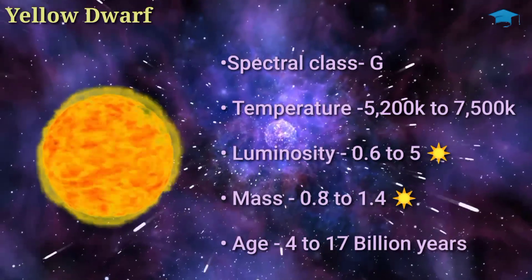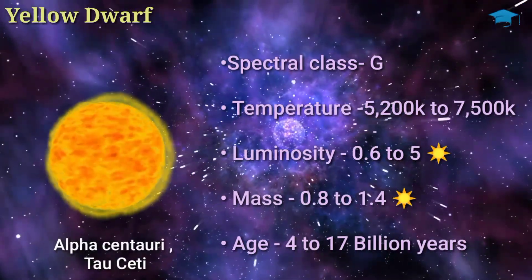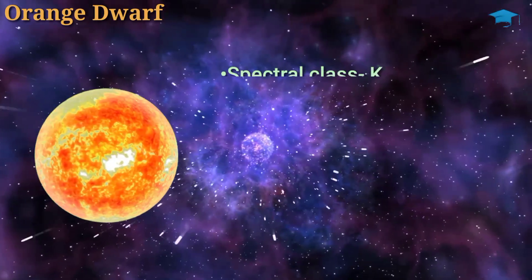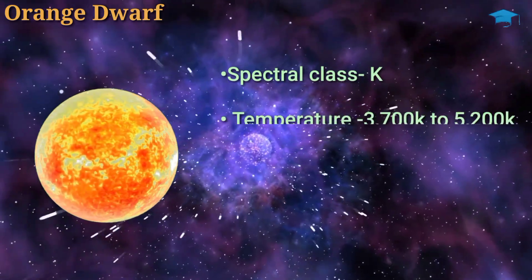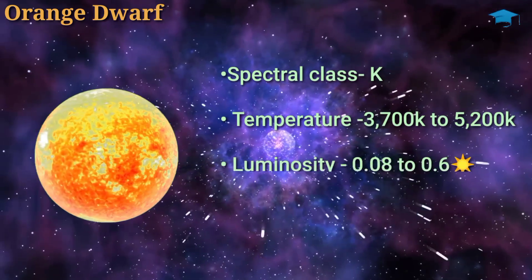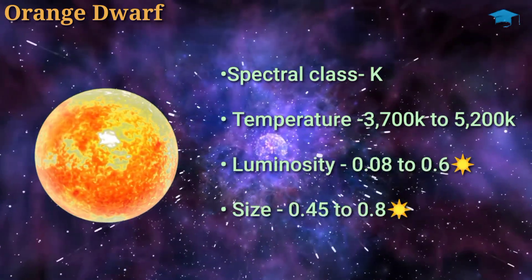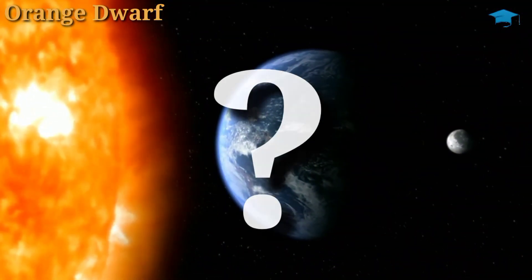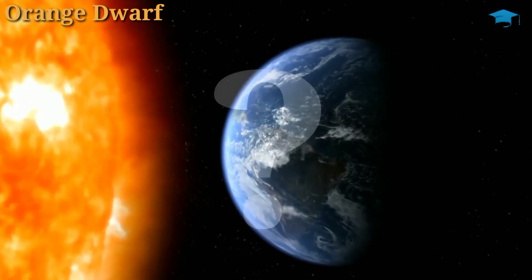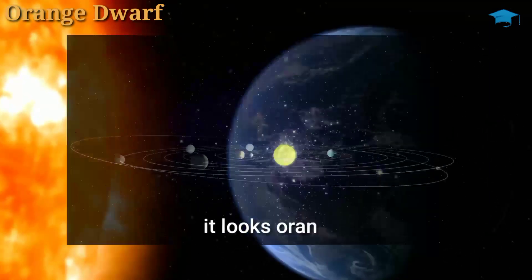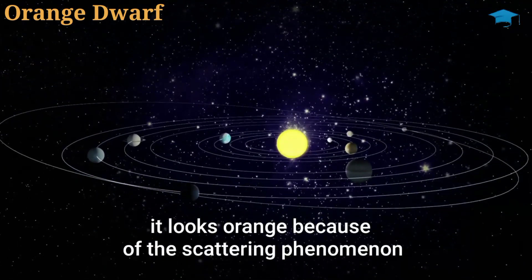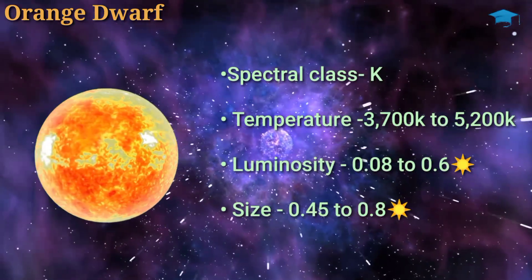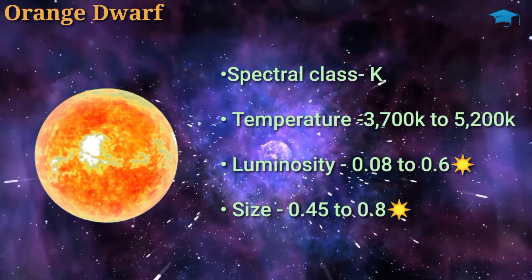The next one are orange dwarfs. These stars are of spectral type K and they have temperatures between 3,700 Kelvin to 5,200 Kelvin and with luminosities of around 0.08 to 0.6 times that of sun. Now most people will think why our sun is not classified as an orange dwarf because it looks orange from earth. It looks orange from earth because of the scattering phenomena of earth's atmosphere. And on the other hand, orange dwarfs have smaller size from 0.45 to 0.8 that of sun.